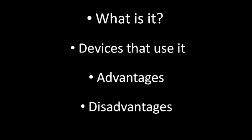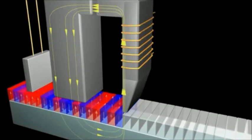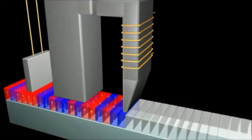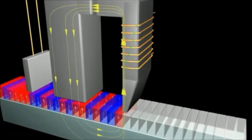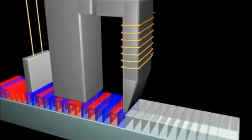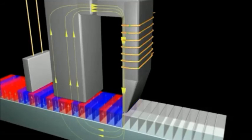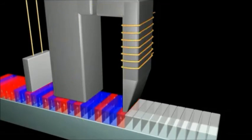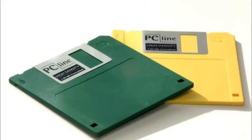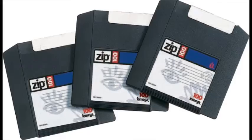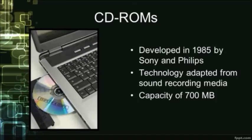Firstly, what is magnetic storage? Magnetic storage is in the form of tiny magnetised dots. These dots write, read, and erase data using electromagnets. Example devices include hard drives, magnetic tapes, floppy disks, zip disks, and jazz disks.